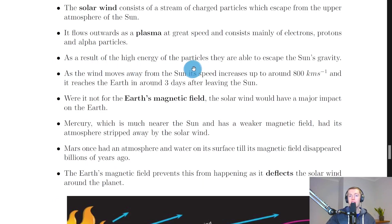As a result of the high energy of the particles, they are able to escape the sun's gravity. As the wind moves away from the sun, its speed increases up to around 800 kilometers per second and it reaches the earth in around three days after leaving the sun.